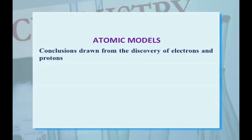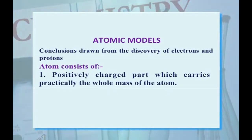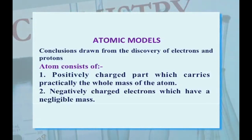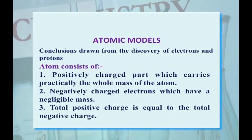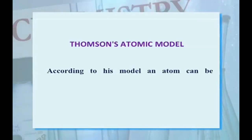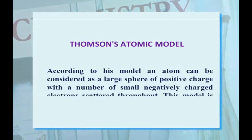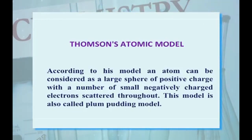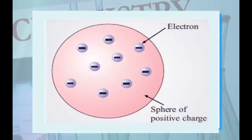Atomic models. Conclusions drawn from the discovery of electron and proton: first, the atom consists of a positively charged particle which carries practically the whole mass of the atom; second, negatively charged electrons which have negligible mass; third, the total positive charge is equal to the total negative charge. Thomson's atomic model: according to this model, an atom can be considered as a large sphere of positive charge with a number of small negatively charged electrons scattered throughout. This model is also called the Plum-Pudding model, where a sphere indicates the positive charge and the negative charges are embedded or scattered within it.